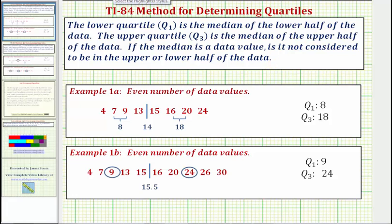Looking at these two examples, we have an even number of data values. Notice how the median here would be 14, and here we'd have a median of 15.5. In these two examples, the median is not a data value, and therefore Q1 is the mean of 7 and 9, which is 8. And Q3 would be the mean or average of 16 and 20, which is 18. In this example, the median of the lower half would be 9, so Q1 is 9, and Q3 would be the median of the upper half, or 24.